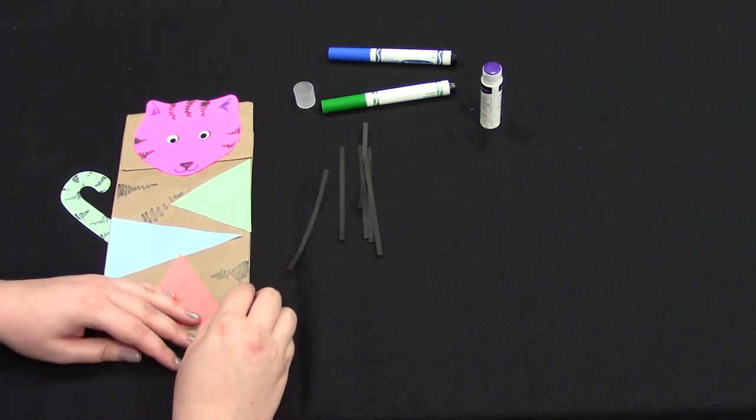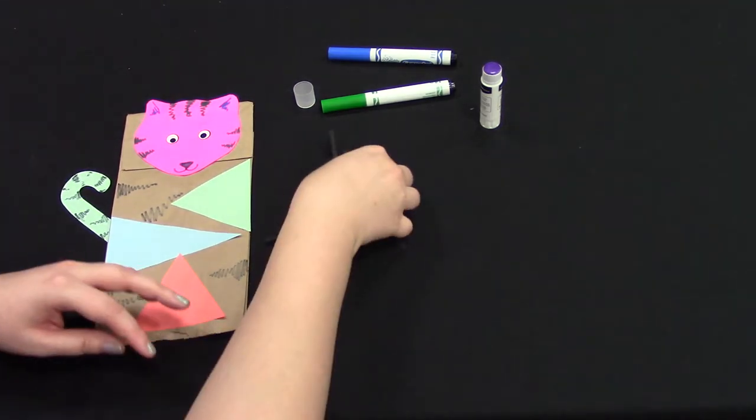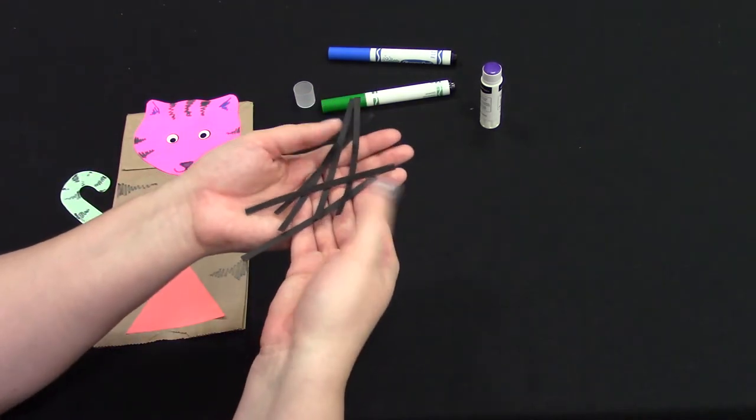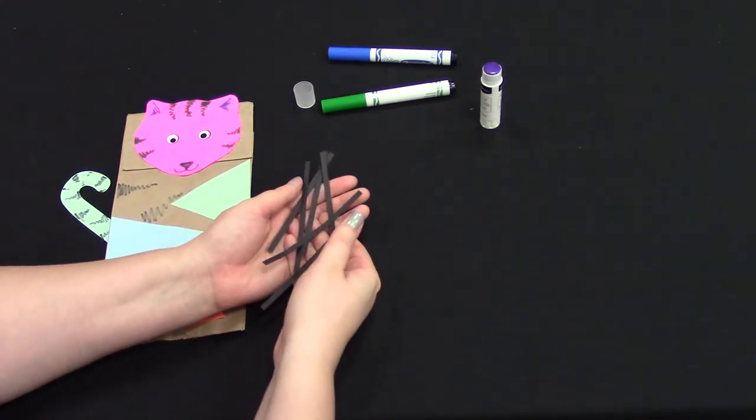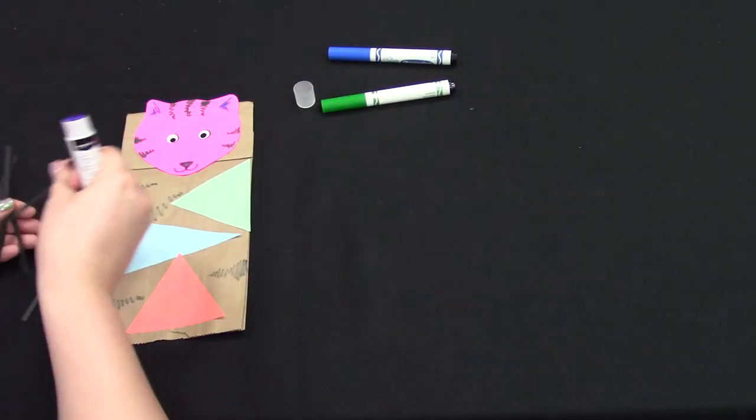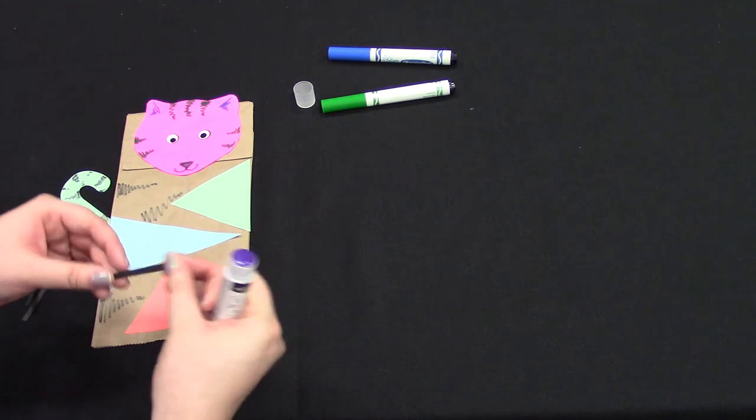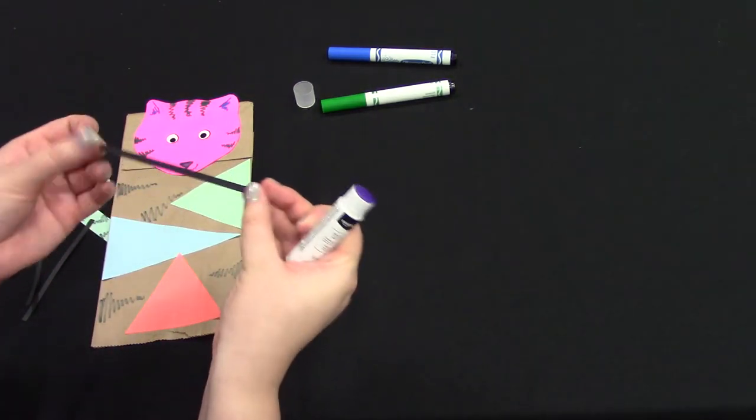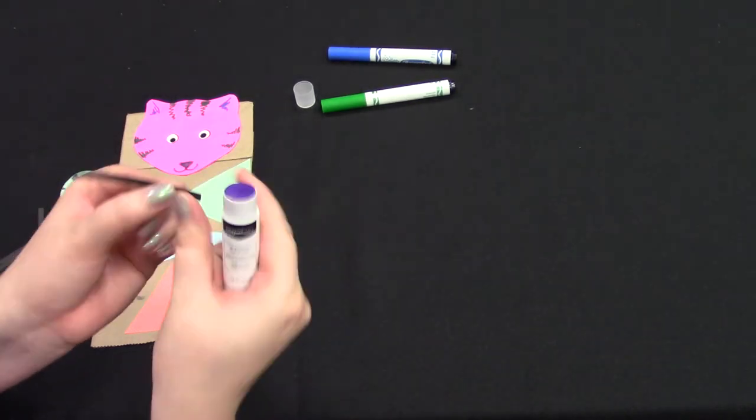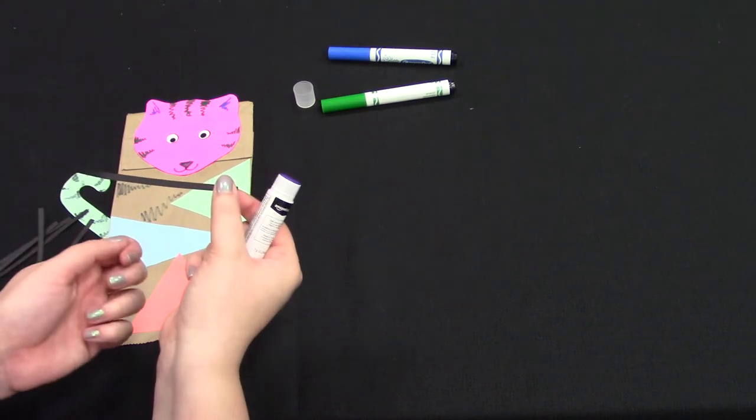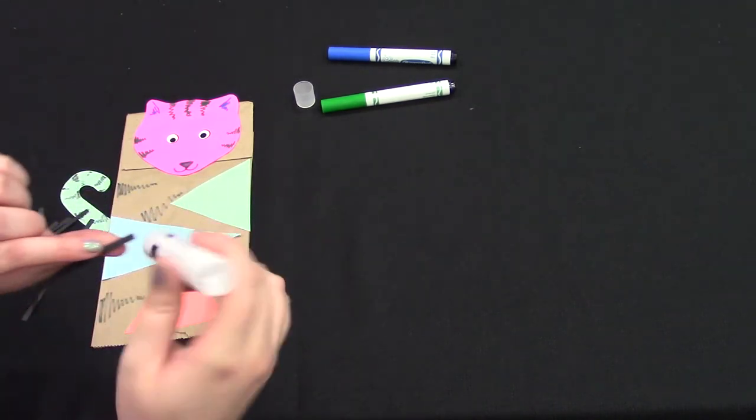Our final step is to give him some whiskers. You're going to take your six black strips and we're going to glue them to either side of his nose. Now you can put glue all the way down each one of your whiskers, or you can put glue just on the ends and that'll make the ends without glue stick up a little bit, make it a little bit 3D. So we're going to try that.